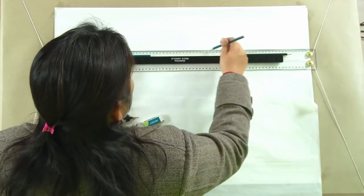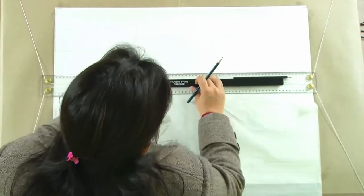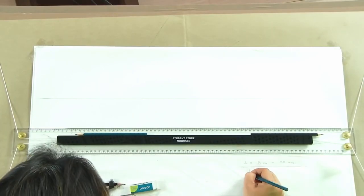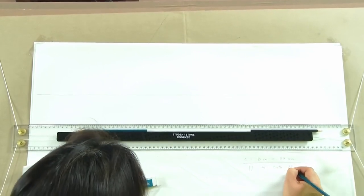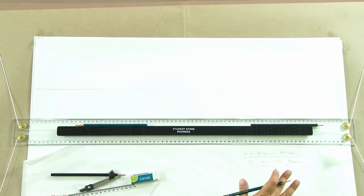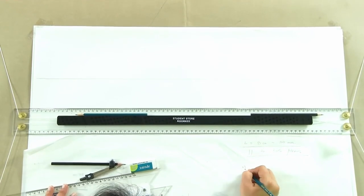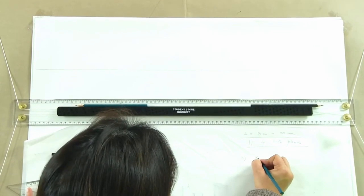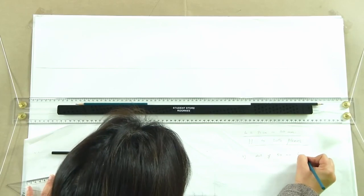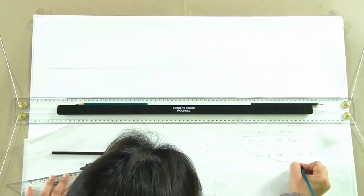Let us draw the XY axis, drawing it continuously because we will be drawing multiple lines parallel to both the planes. Condition 1: assume the length of the line L is equal to 8 centimeters or 80 mm. This length is constant, and the other condition is that the line is parallel to both the planes. In case 1, this parallel line is at a distance of 50 mm from VP and 30 mm from HP.